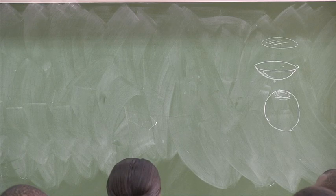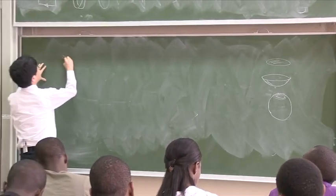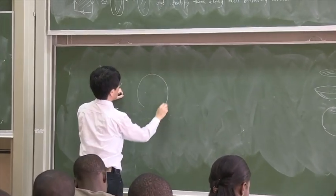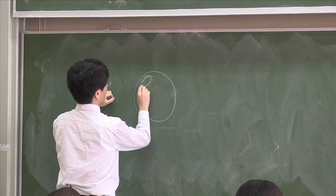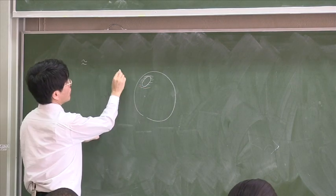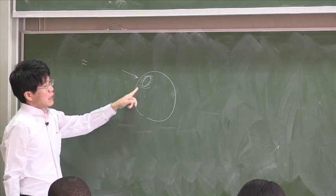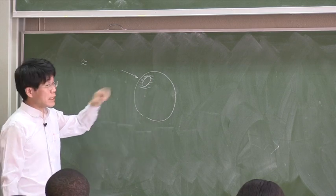And then, just keep stretching this. And eventually, I get a shape like this, which is a sphere with one hole drilled out. That shape, sphere minus a disc, is still homeomorphic to a disc. Okay? So, we can, in fact, visualize this as follows. Instead of a disc, let's take a sphere with a hole drilled out.